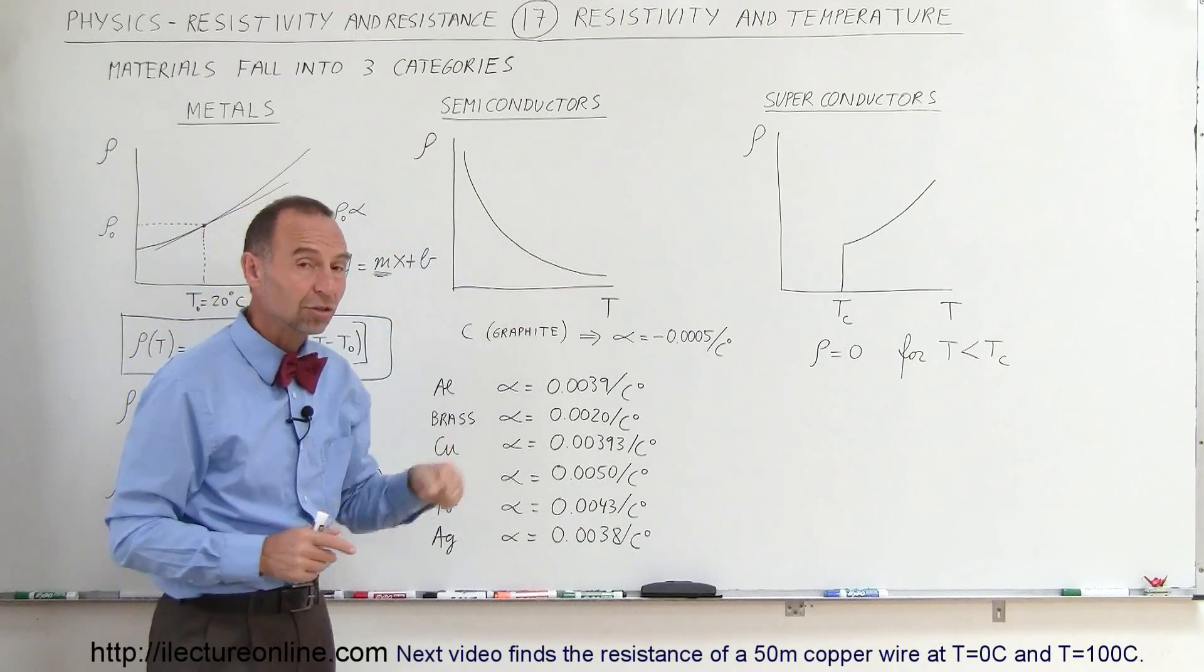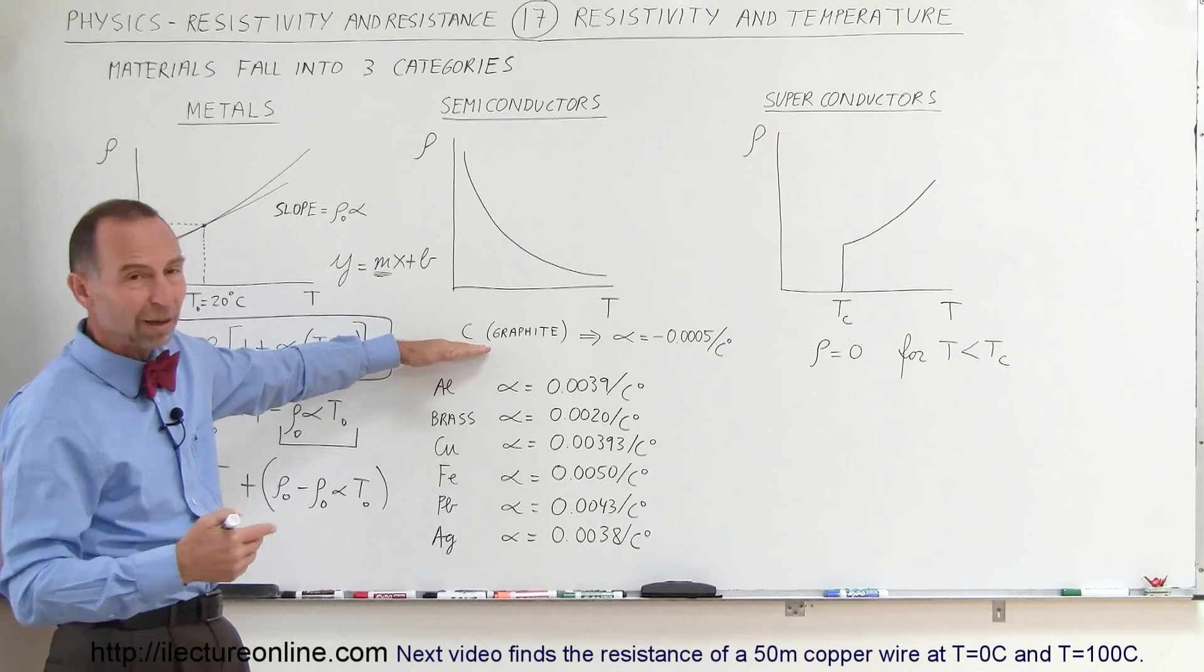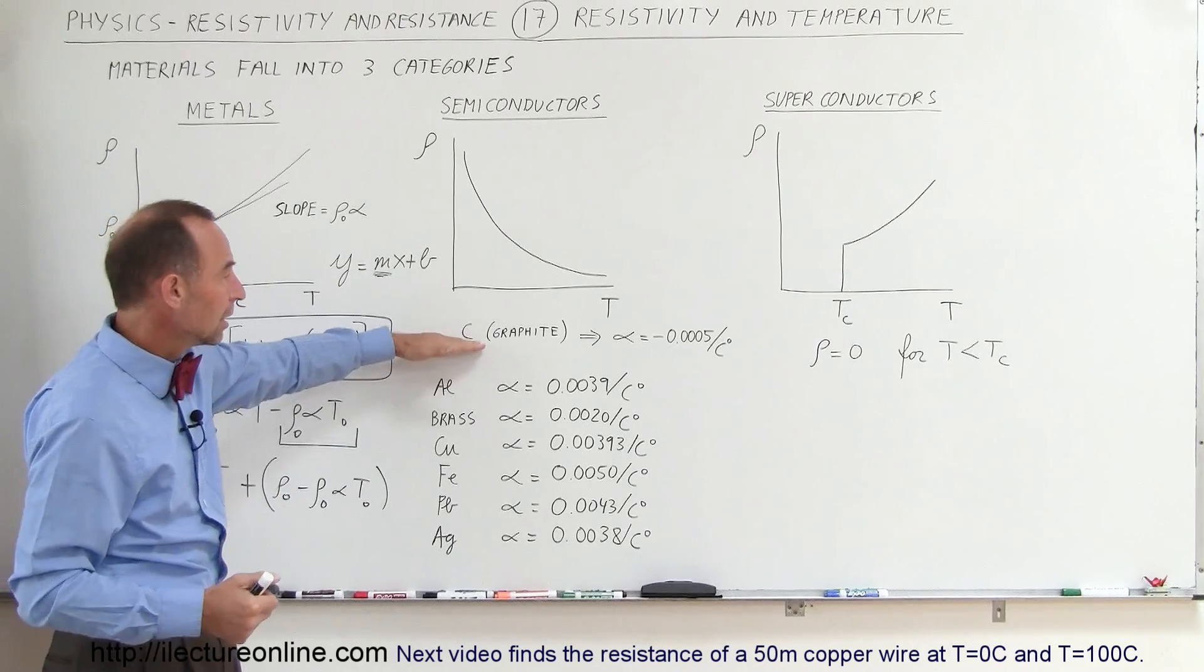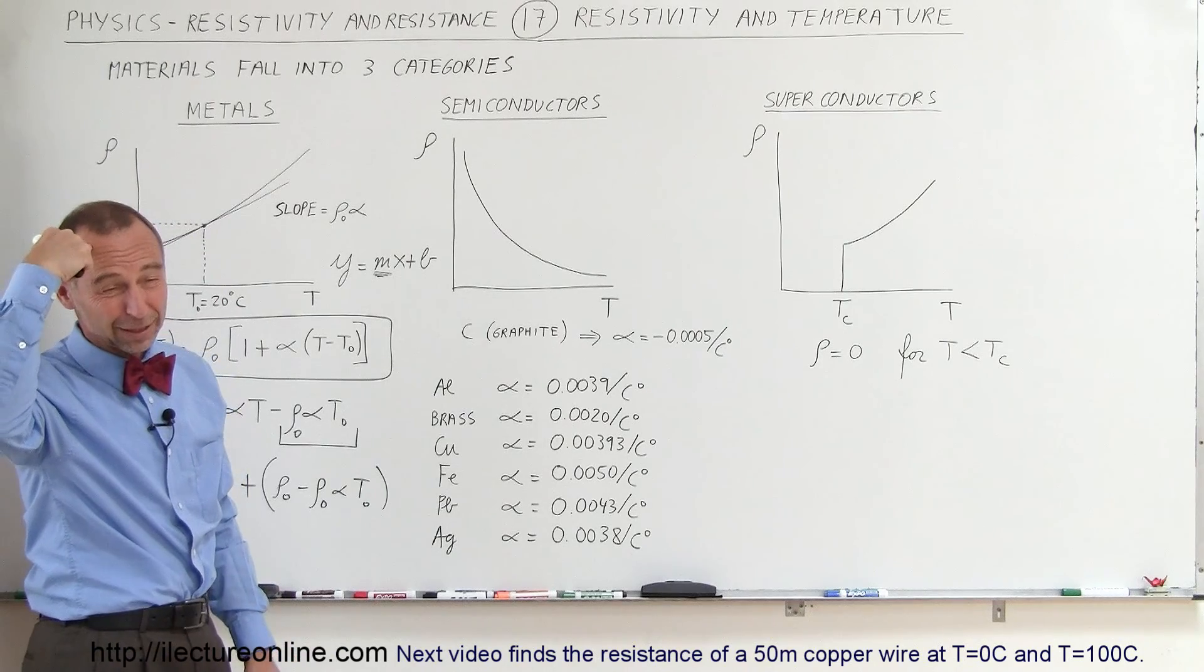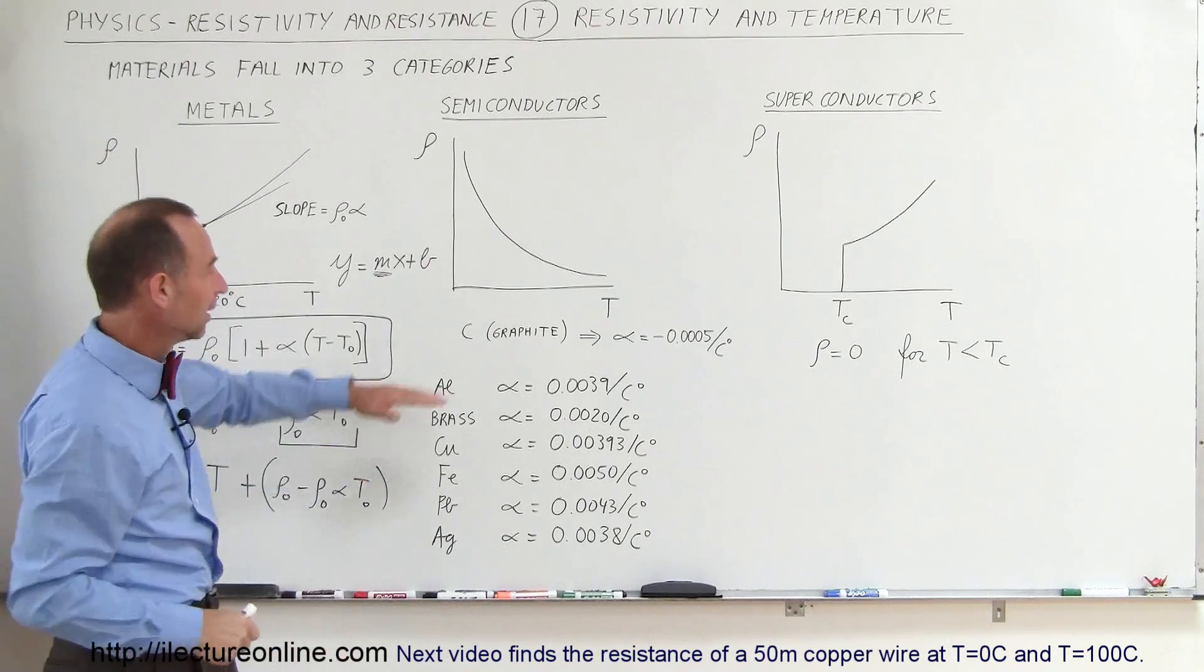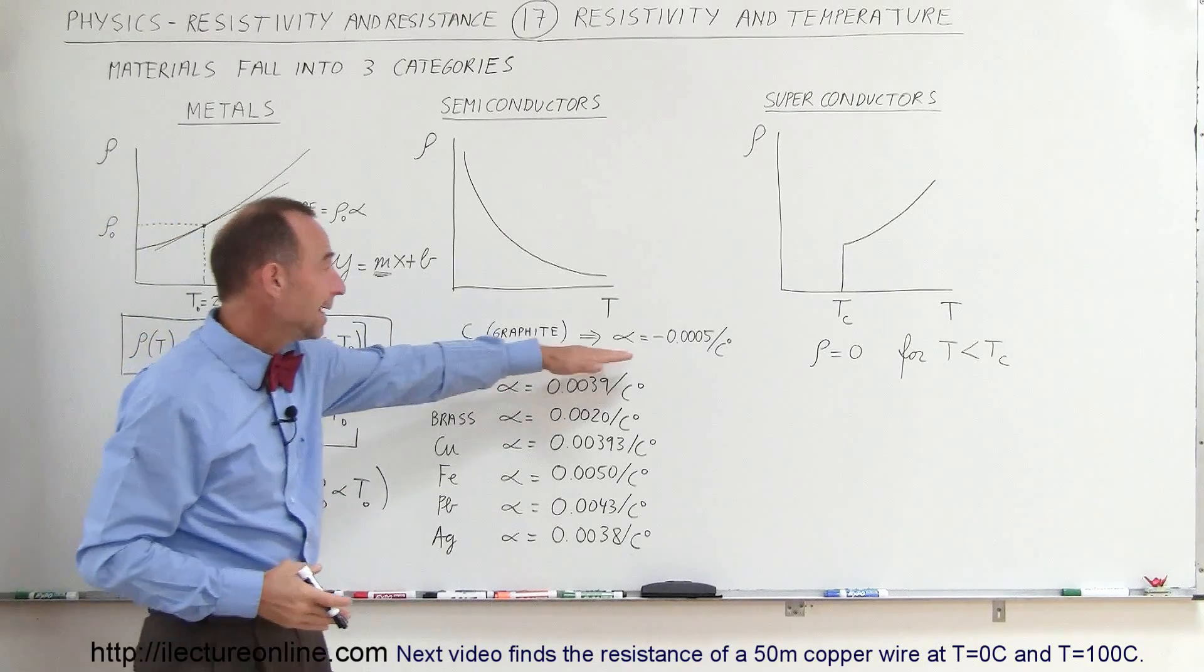For example, graphite, which is basically the ladder structure of carbon. Notice that the temperature coefficient is actually negative.